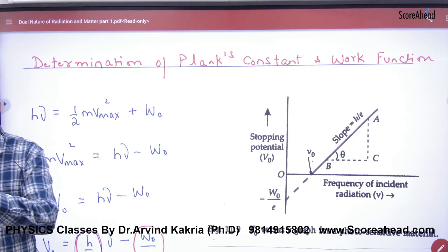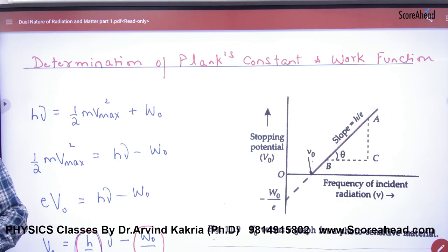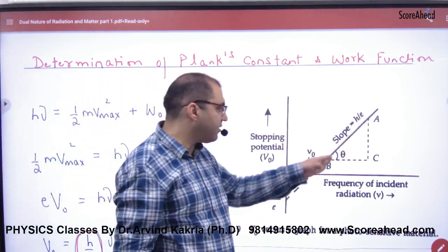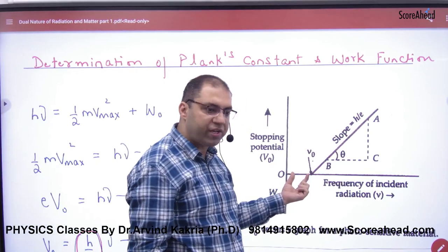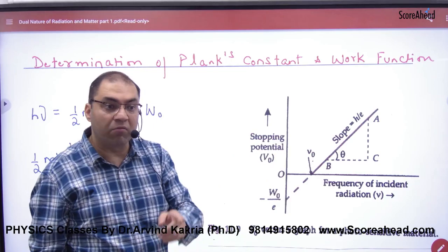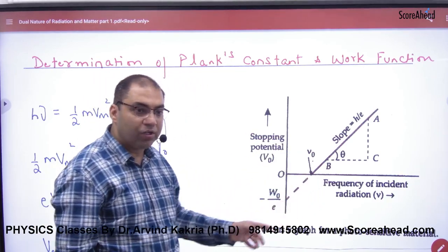Determination of Planck's constant and work function. This graph that scientists made shows if frequency increases, photoelectric emission will or won't happen. Einstein showed this mathematically. How?